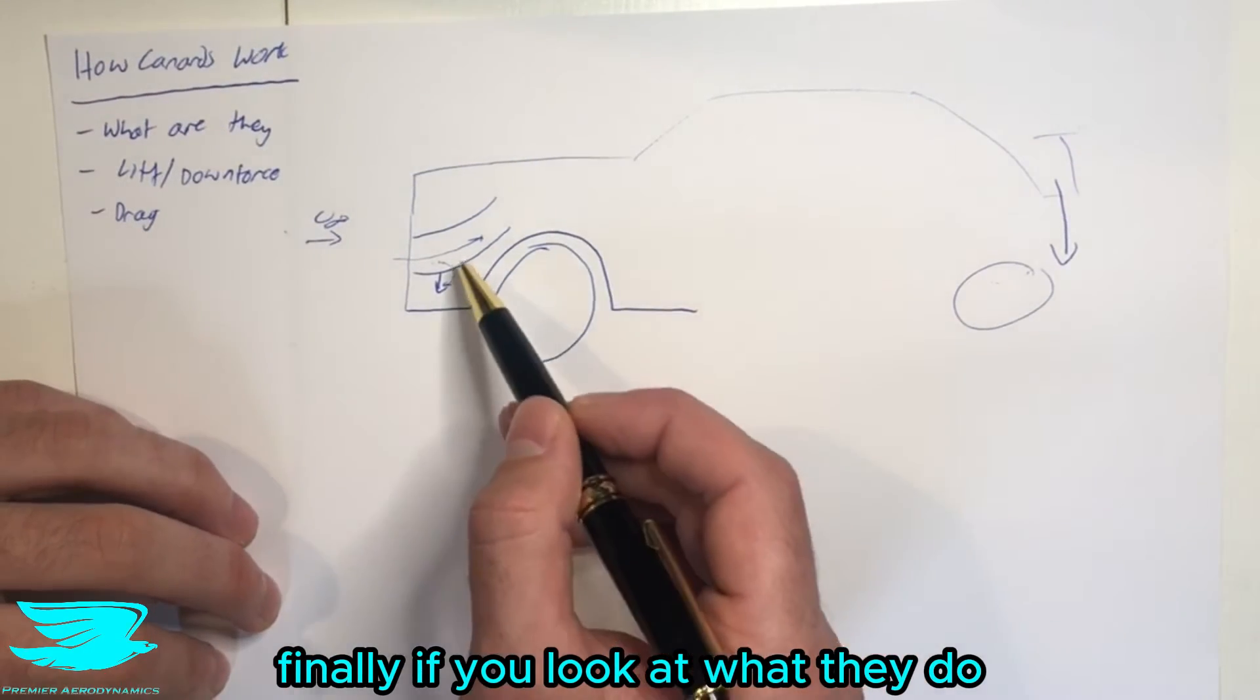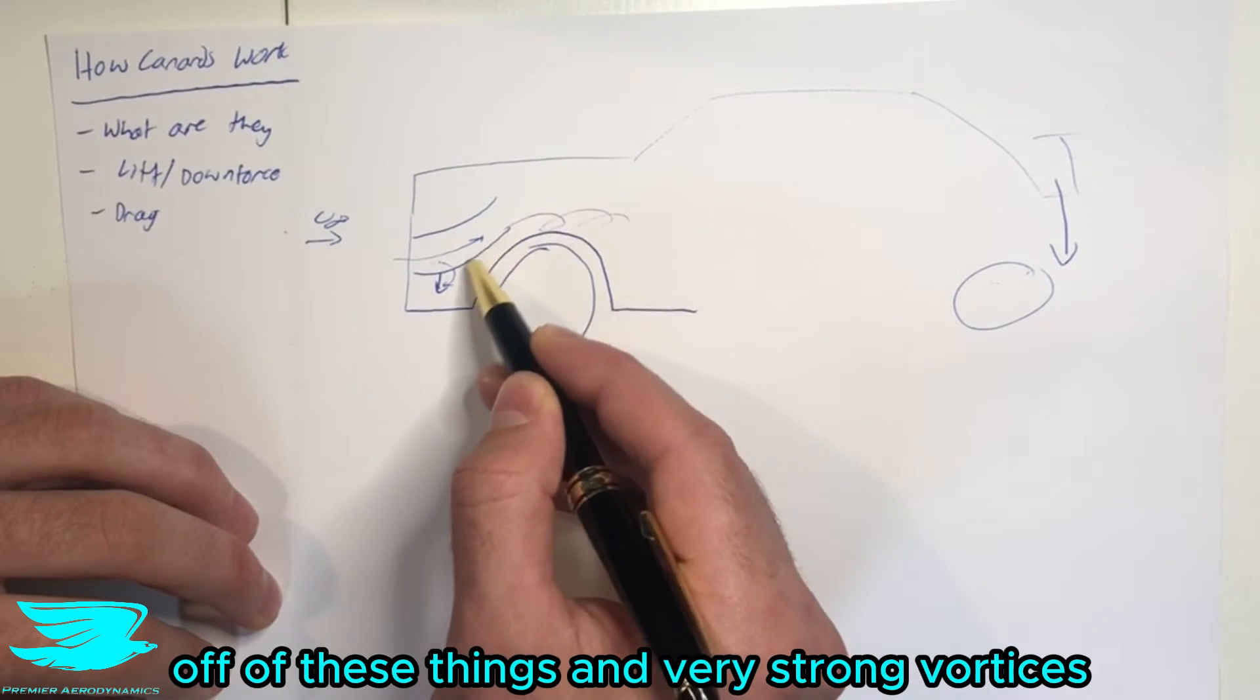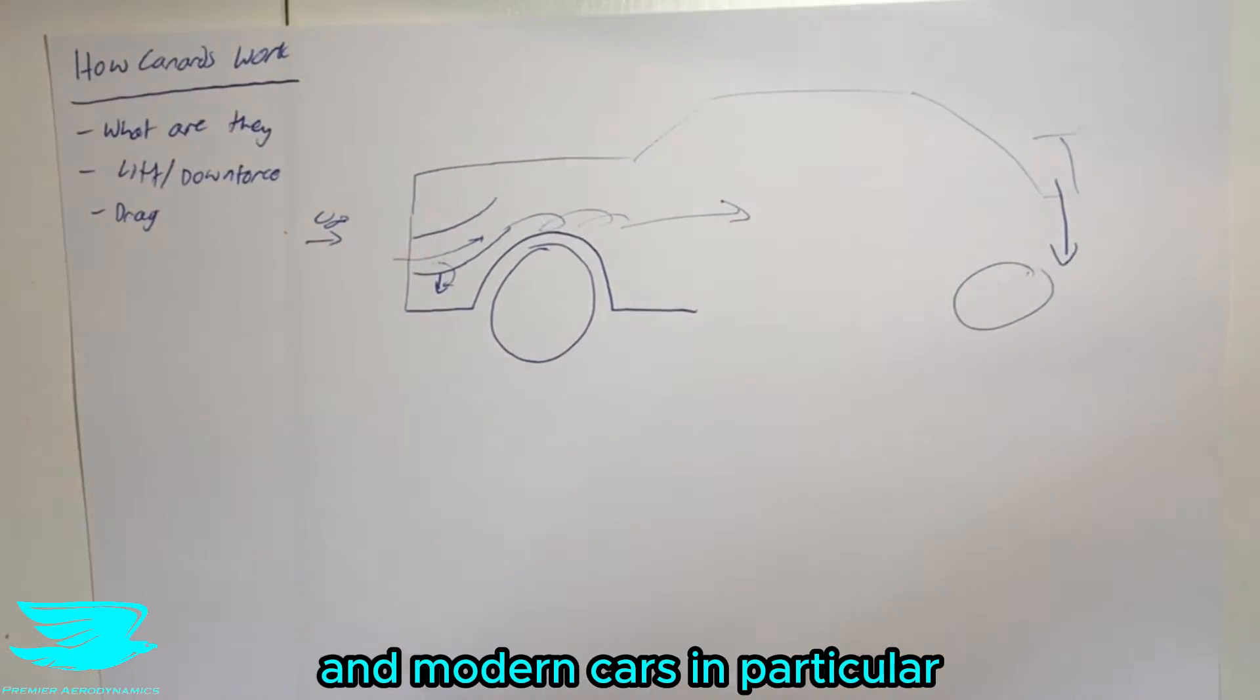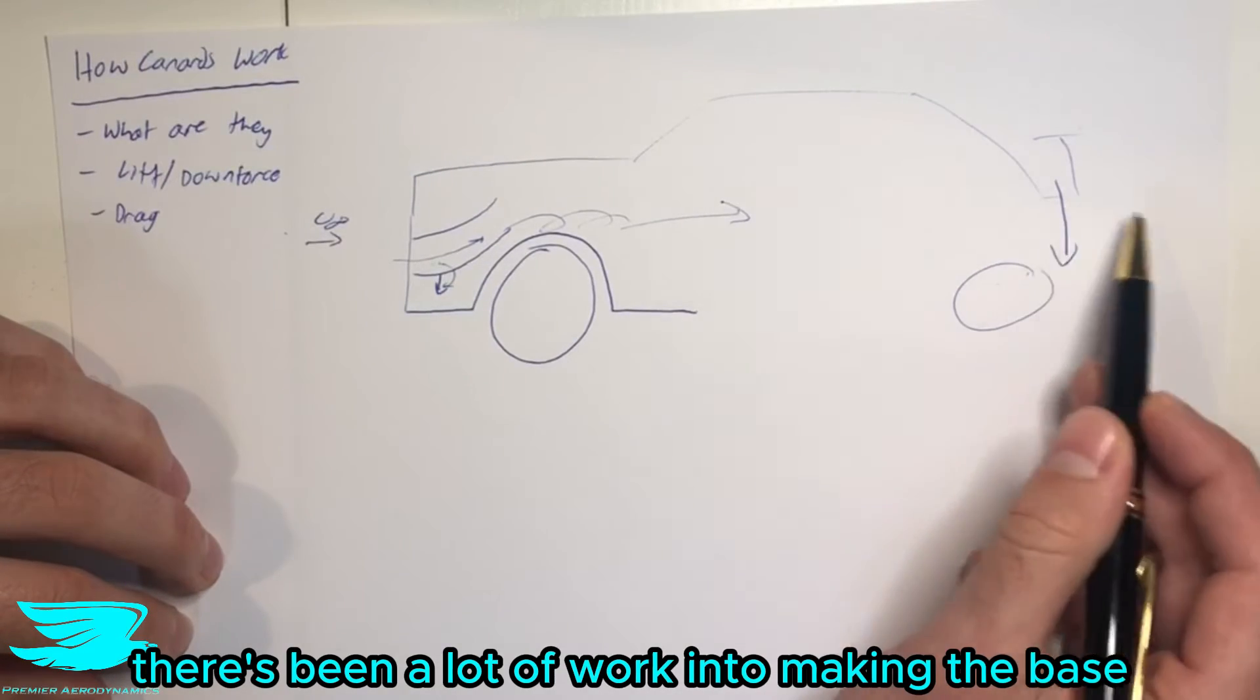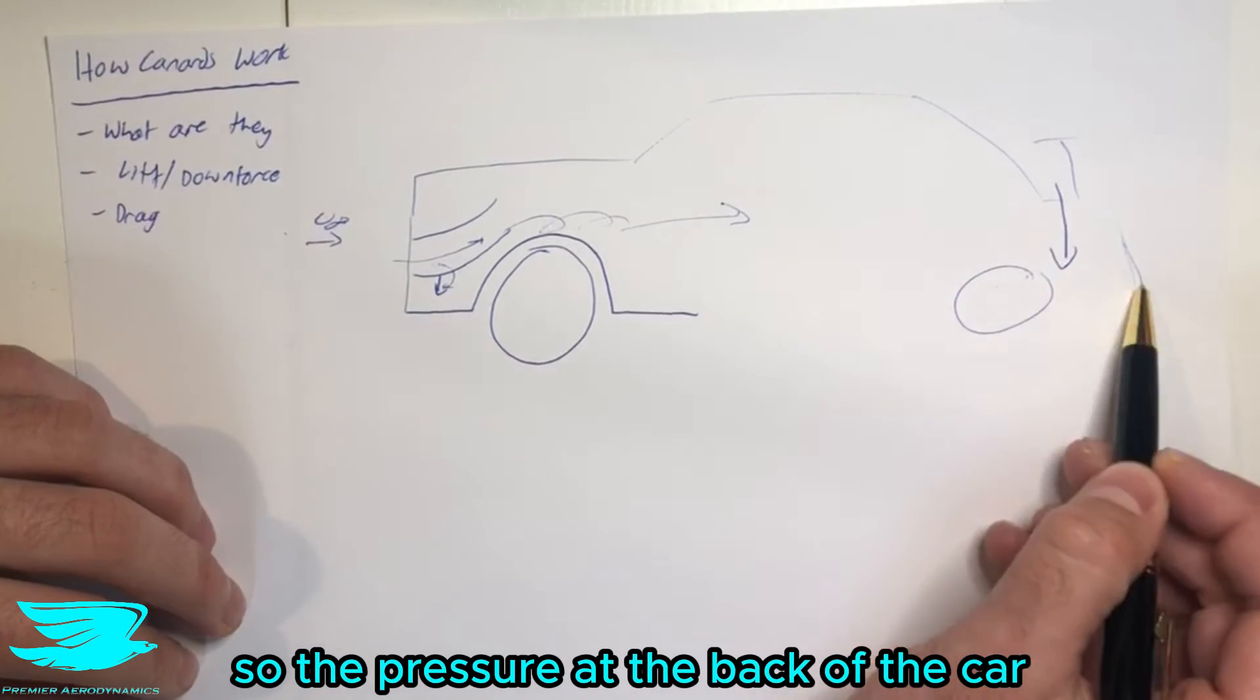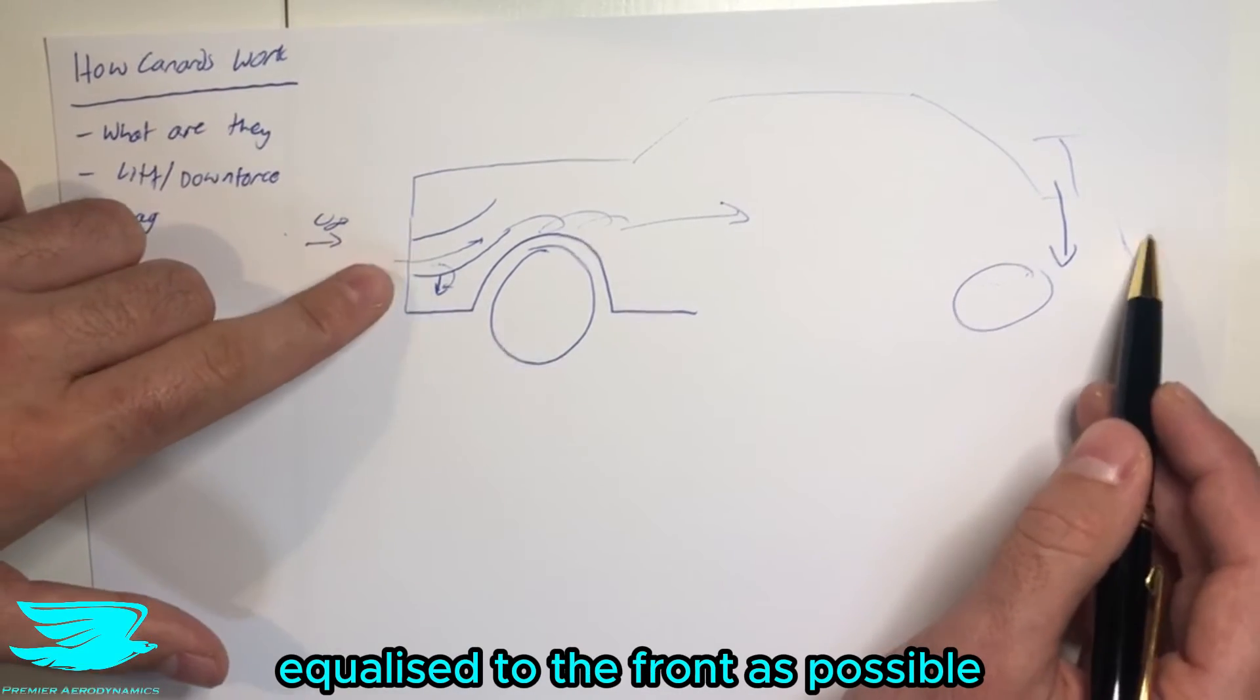Finally, if you look at what they do, potentially we will be getting vortices off of these things, and very strong vortices if we produce a lot of downforce. Now these vortices travel downstream. And modern cars in particular, particularly everyday cars, there's been a lot of work into making the base, the wake at the back and the base pressure—so the pressure at the back of the car—as small as possible, so the wake is small, and also the pressure at the back is as equalized with the front as possible.